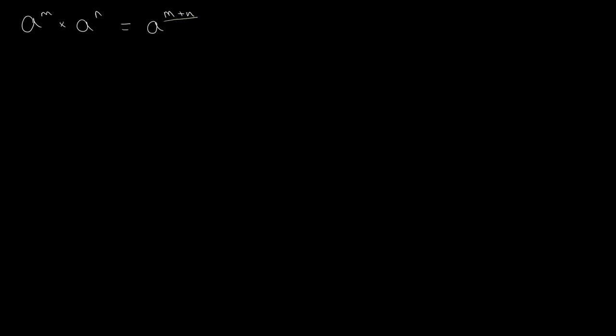Here we have the first and most basic law of indices: a to the power of m times a to the power of n is equal to a to the power of m plus n. This is pretty self-explanatory. For example, two to the power of four multiplied by two to the power of three gives us two to the power of four plus three, which is equal to two to the power of seven.